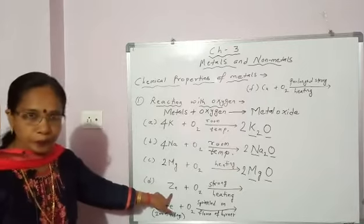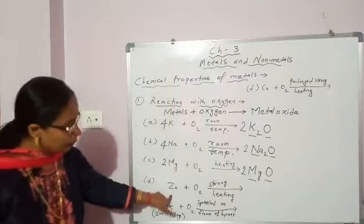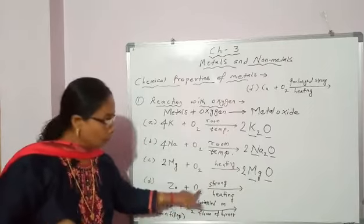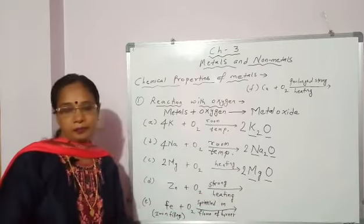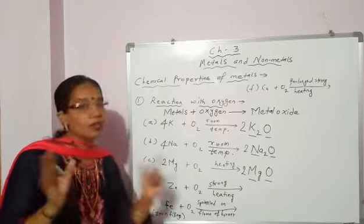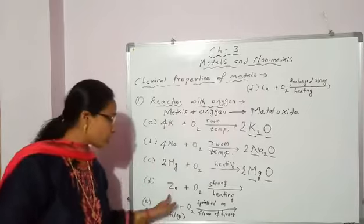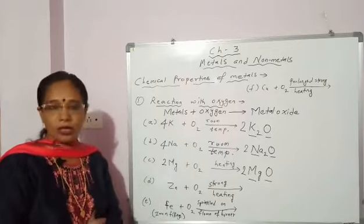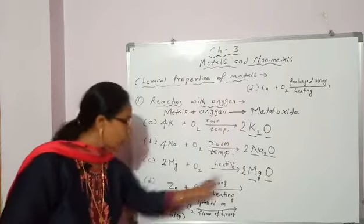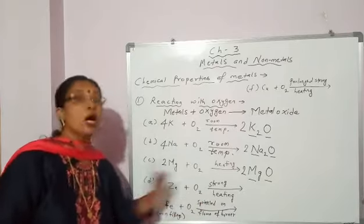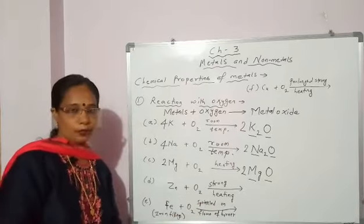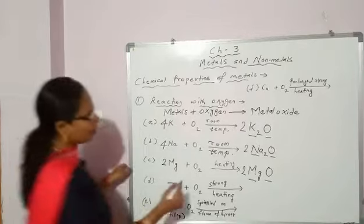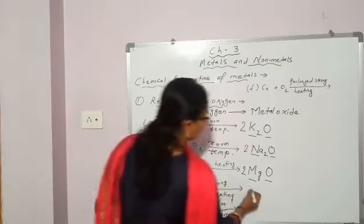Next, zinc. Zinc reacts with oxygen on strong heating — at room temperature it won't react, and even normal heating will not work, but on strong heating zinc will react with oxygen. And what is formed? Zinc oxide. The formula for zinc oxide is ZnO.